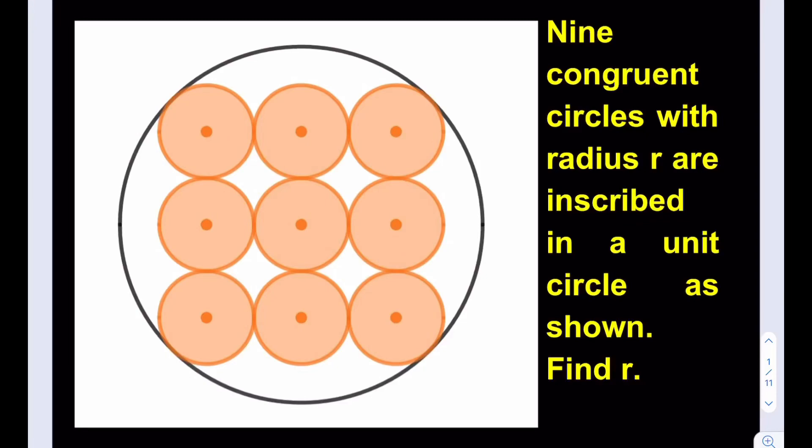Hello everyone. In this video we're going to be looking at a Japanese temple problem — in other words, a Sangaku. Nine congruent circles with radius r are inscribed in a unit circle as shown. Find r.